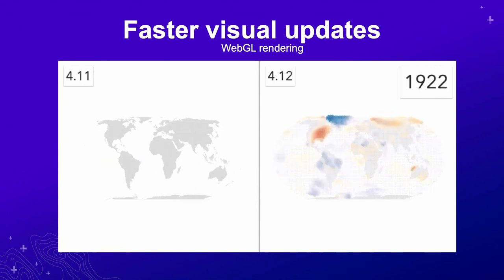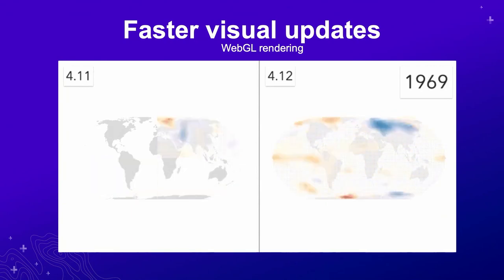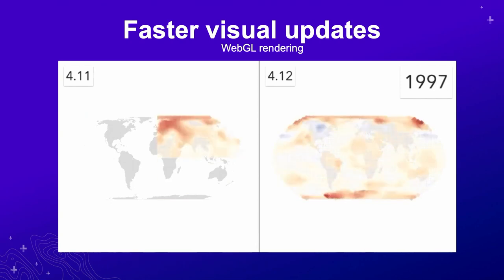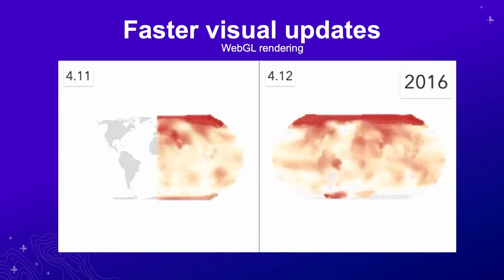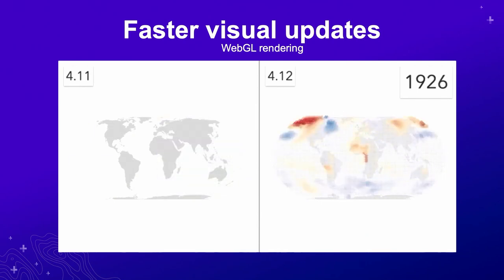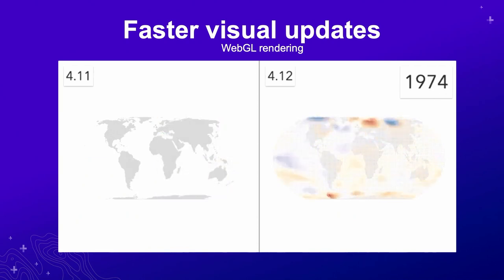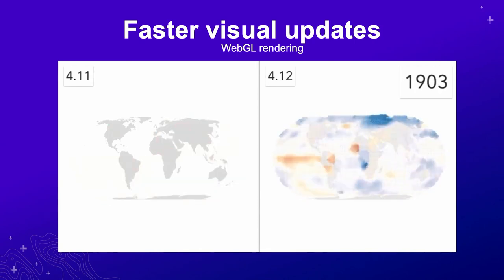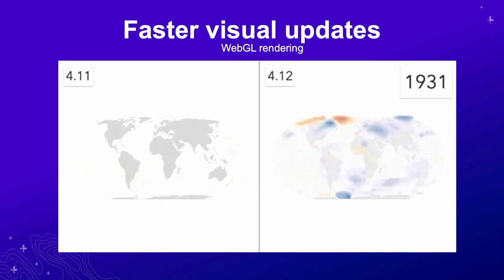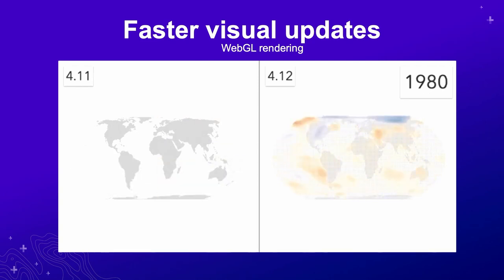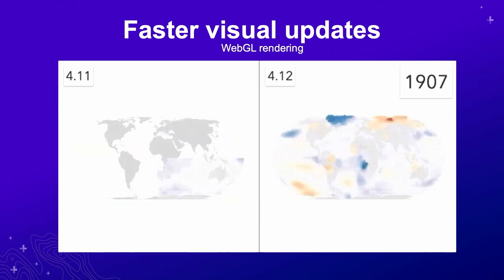Since last Dev Summit, we spent a lot of time trying to improve the performance of when you change your renderer. Looking at these two examples - they're both pulling the same dataset and basically changing a renderer. They're actually changing two visual variables - a color and a size visual variable - which include arcade expressions from year to year. Every year change is a new renderer that gets applied. At last Dev Summit, you could get something like what's on the left there, which is really not usable.